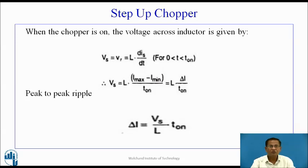When the chopper is on, the voltage across the inductor is given by VL = L·dI/dt, and during this duration Vs appears across VL. Therefore, Vs = VL = L·dIs/dt for the duration 0 < t < T1. Here, dI is the change in current from Imax to Imin. Therefore, Vs = L·(Imax − Imin)/T1 = L·ΔI/T1. Thus, ΔI = (Vs/L)·T1.